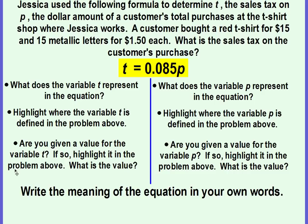Okay, Jessica used the following formula to determine T, the sales tax on P, the dollar amount of a customer's total purchases at the t-shirt shop where Jessica works. A customer bought a red t-shirt for $15 and 15 metallic letters for $1.50 each. What is the sales tax on the customer's purchase?